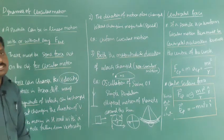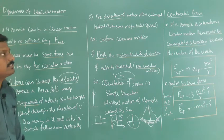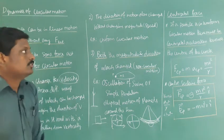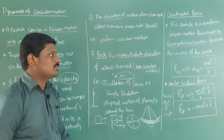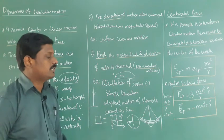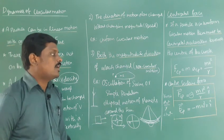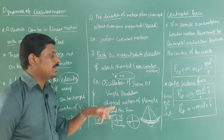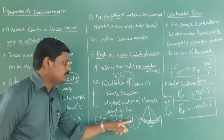In this class we discussed dynamics of circular motion and centripetal force. A force acting towards the center is centripetal force, with formula minus mv²/r times R-cap, where R-cap represents the direction of that force acting towards the center.